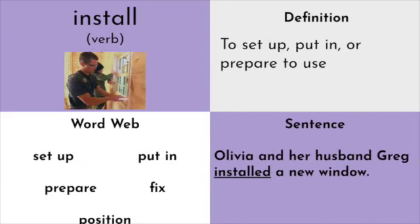Our next word is install. It is a verb which means to set up, put in, or prepare to use. Word web words: set up, put in, prepare, fix, or position. Our sentence: Olivia and her husband Greg installed a new window — they put in a new window. That's what it means to install something: you get something new and you put it in. We install software into our computers all the time — it asks for updates and will ask you to install programs or apps into our phones, tablets, or computers.